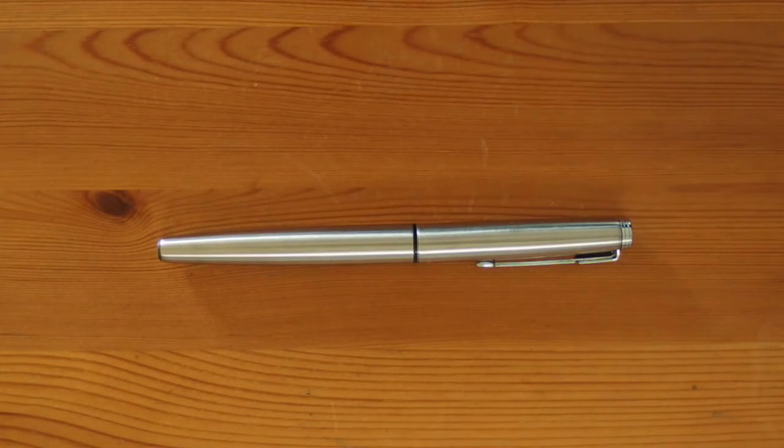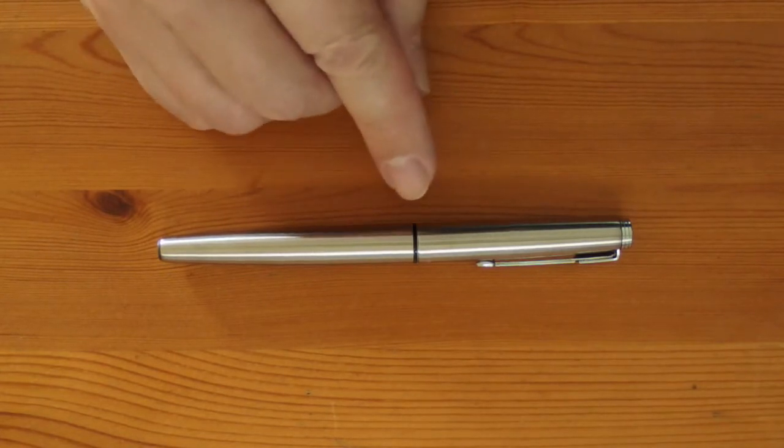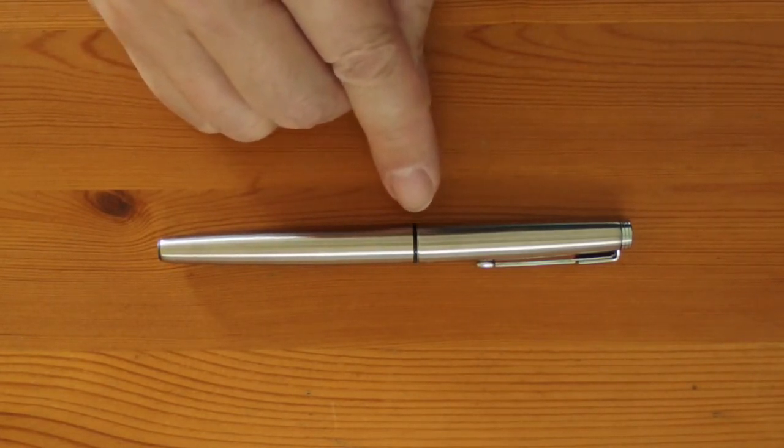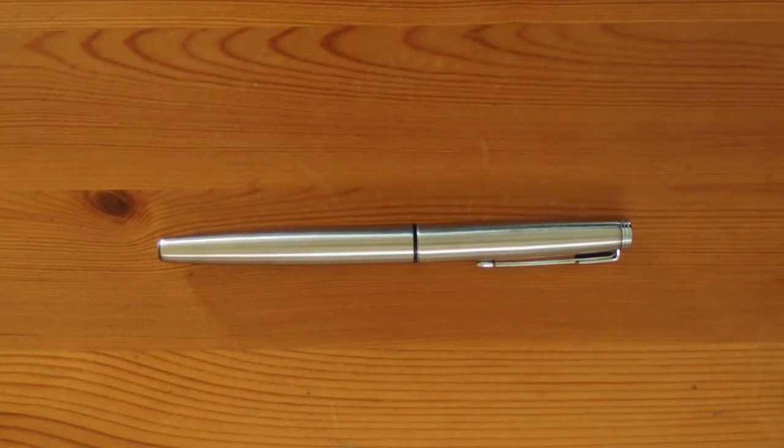Notice how the cap and barrel are completely flush, giving it a very sleek look. Just below the edge of the cap is the black band, and upon closer inspection, there's a very slim steel ring above it. As far as I can tell, this is the characteristic unique to this pen.